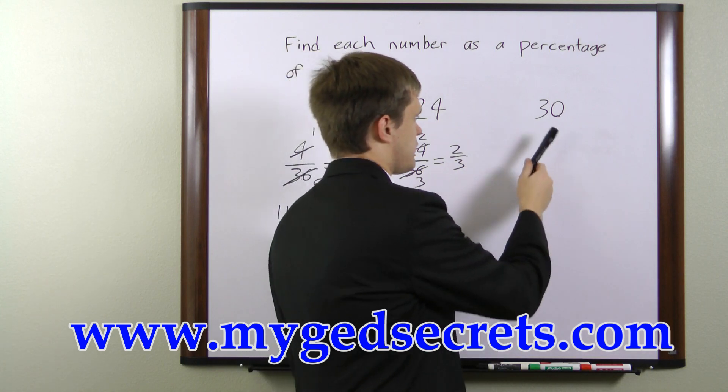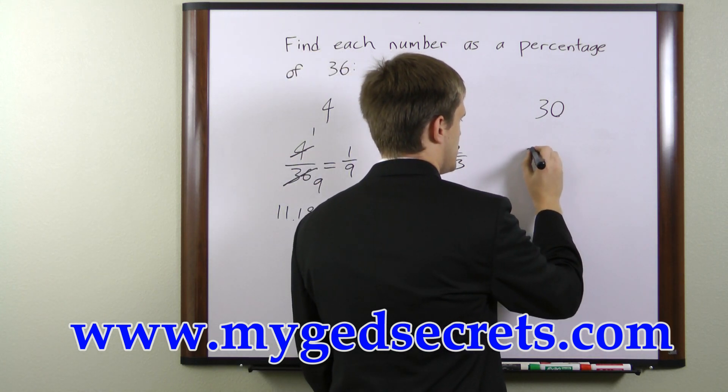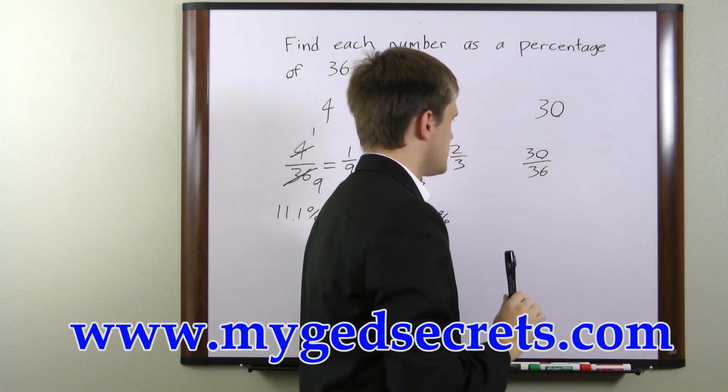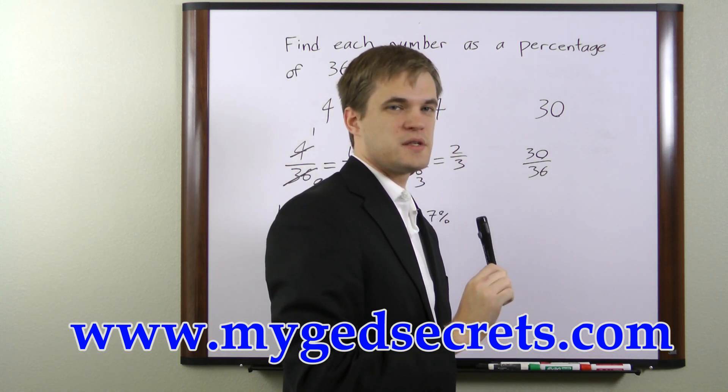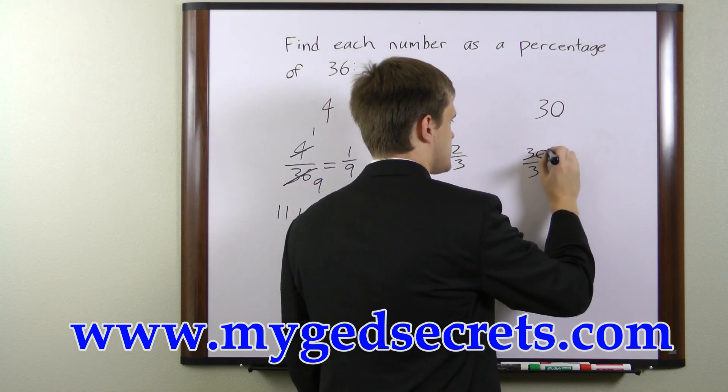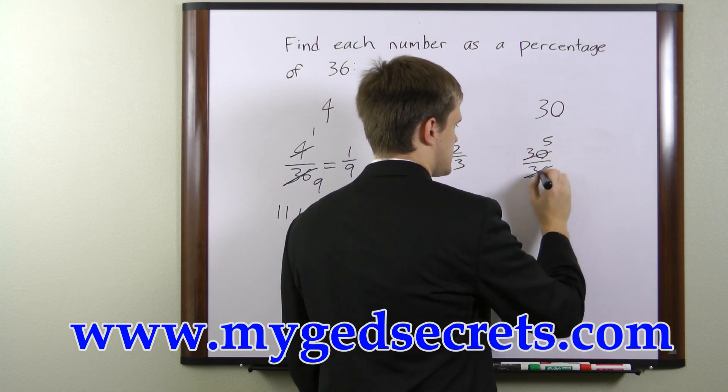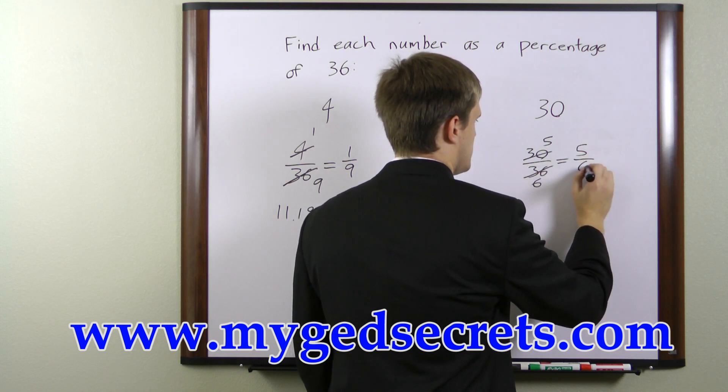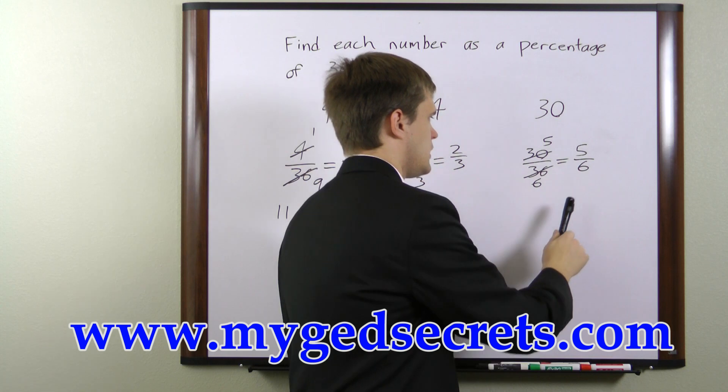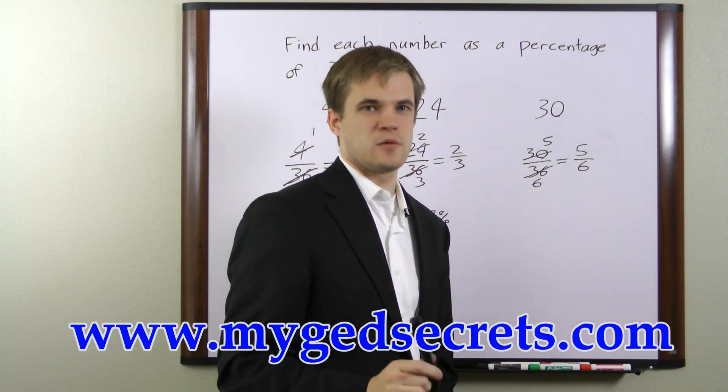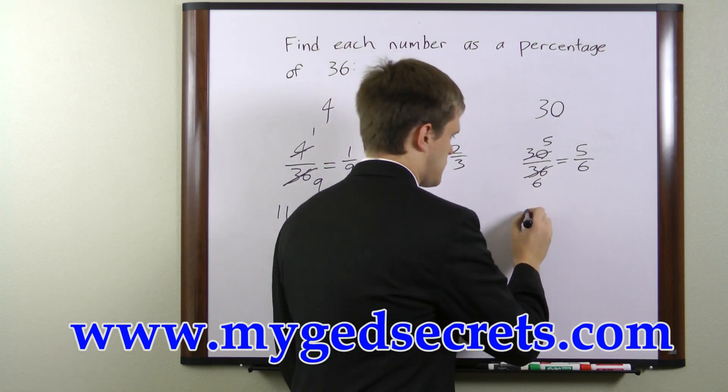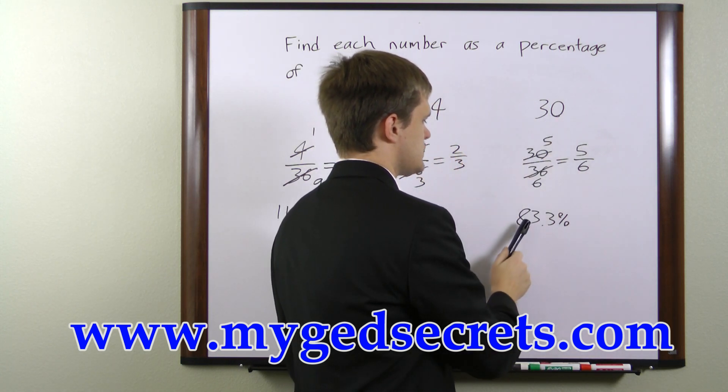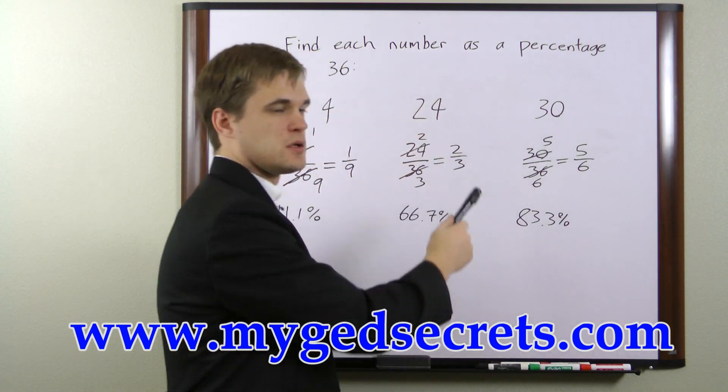The final example, we have 30, so to find the percentage of 36, we'll divide it by 36. In this case, we can divide top and bottom by 6. So 30 divided by 6 is 5, and 36 divided by 6 is 6. So we have 5 over 6. Now 5 over 6 as a percentage is 83.3 percent. So 30 is 83.3 percent of 36.